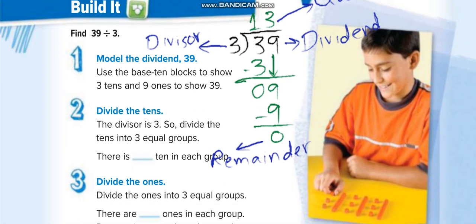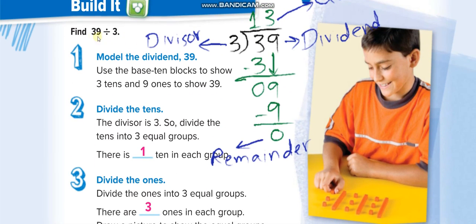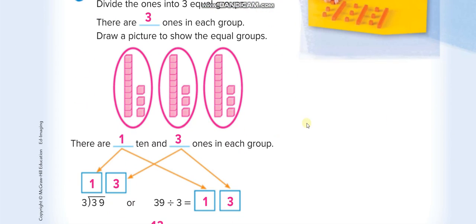Let me show you the answers so you can copy them. We were dividing 39 by 3 — it means we have 39 things and we are dividing into 3 groups. Each group gets 13. If you count them all it's 39.